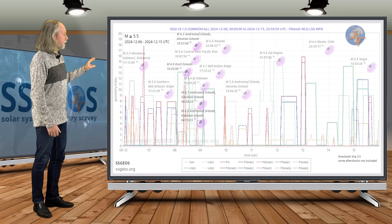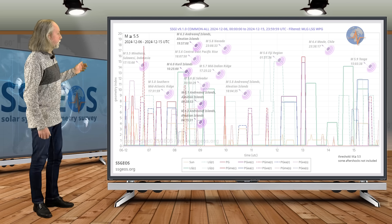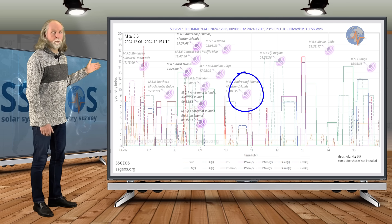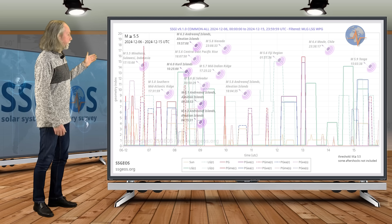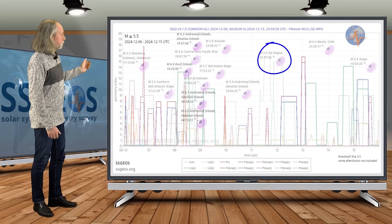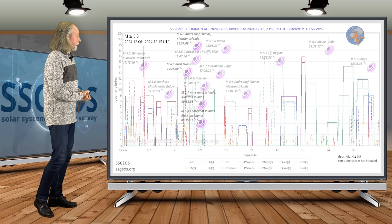We also see some moderate tremors in the higher 5 magnitude range on the 10th: 5.8 that followed a planetary conjunction with Mercury, and also the 5.6 in Fiji. Nothing unusual, really. We see that with the lunar peaks on the 11th and 12th.